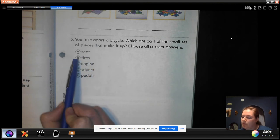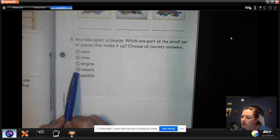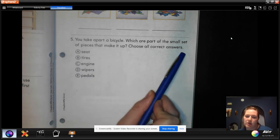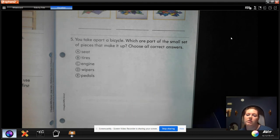A. Seat. B. Tires. C. Engine. D. Wipers. E. Pedals. Choose all correct answers. So there should be more than one. Which ones are part of a bicycle?